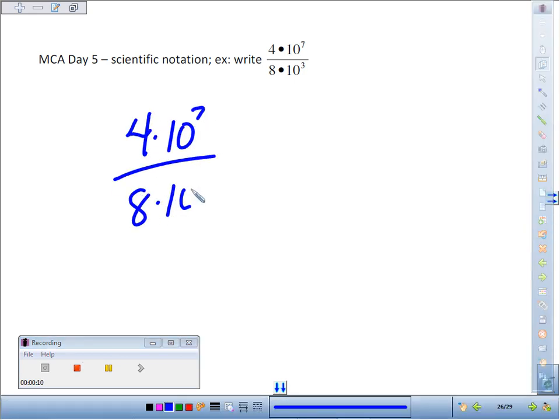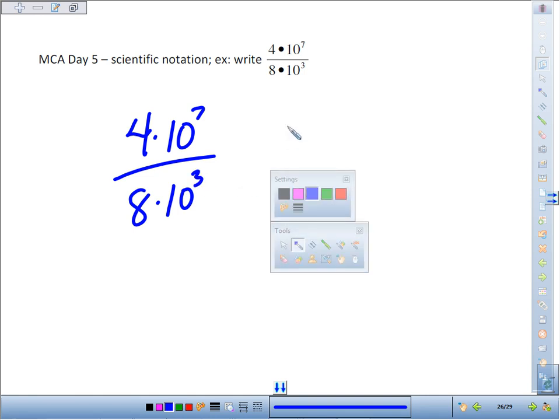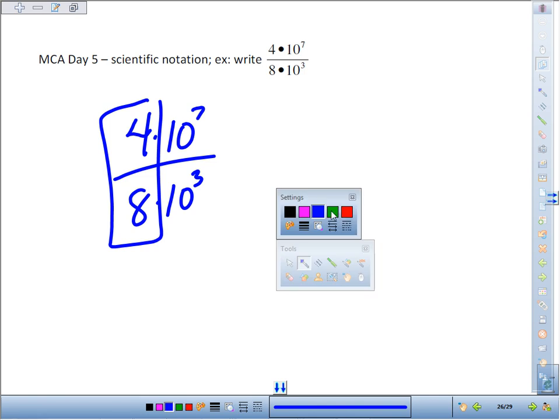How you want to attack these scientific notation problems is just deal with your numbers first. Ignore the powers of 10. Just deal with 4 divided by 8. Now 4 divided by 8, that reduces to 1 half or 0.5.